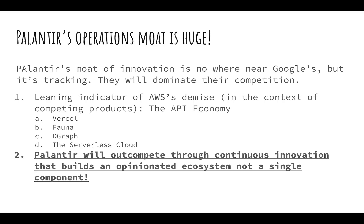Palantir's operations moat is huge. It's not near Google's moat of innovation and operations — they're probably not going to be there for a really long time; Google is incredible. But it's tracking, and it will dominate their competition. Looking at competitors: AWS and maybe Databricks. AWS is going to struggle to maintain the services they've built — the leading indicator is the API economy. AWS has created a horrible developer experience through their control plane, and I don't want my developers spending time learning and maintaining the AWS control plane because it adds absolutely zero value — every hour spent there is time not spent building features.